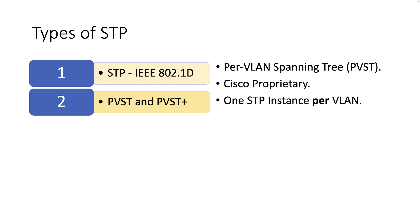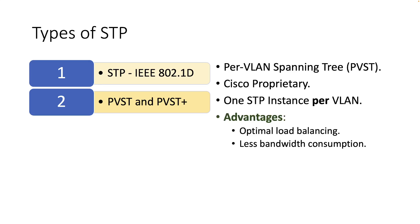Next, we have PVST, which stands for Per-VLAN Spanning Tree. It is a Cisco enhancement of STP that creates a separate 802.1d spanning tree instance for each VLAN configured in the network. This means that each VLAN has its own root bridge and its own calculations. The main advantage of the Per-VLAN Spanning Tree approach is that it allows the spanning tree to be optimized for the traffic for each VLAN as it provides optimal path selection. Moreover, the bandwidth consumption is less than the original STP.